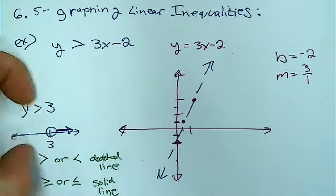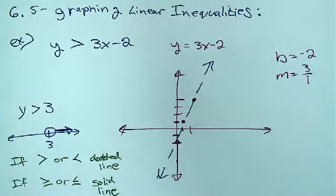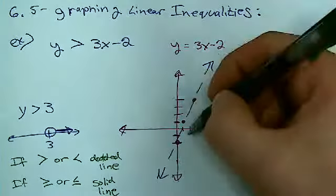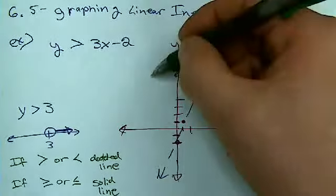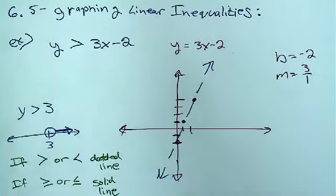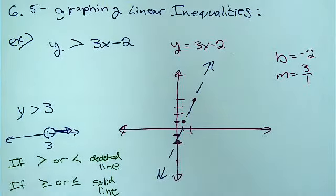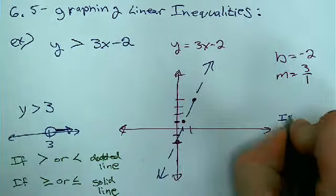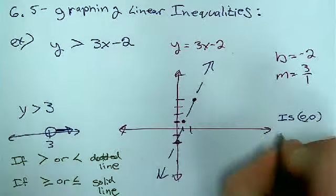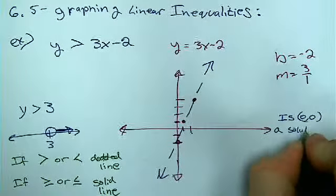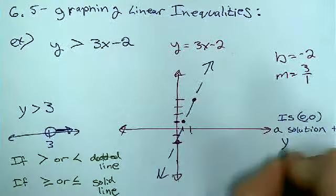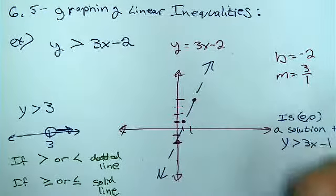Now I'm still not done yet. I still have to shade one side or the other of these two lines. Now the trick to get this right is: is 0, 0 a solution to y is greater than 3x minus 2?